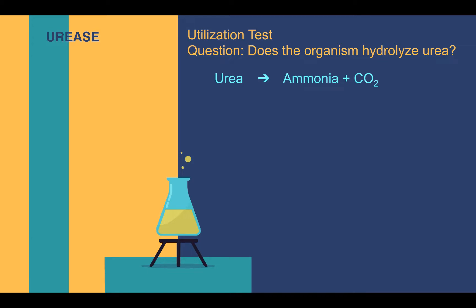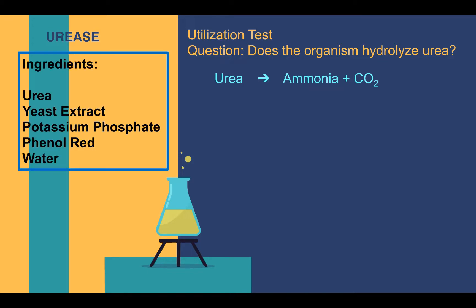Let's look at the ingredients of this medium. First, there is urea — we provide urea to the organism to see if it can break it down. Next, there is yeast extract, which is the only source of nutrients in this medium. This medium is also highly buffered, and that is the role that potassium phosphate serves. If an organism is capable of using urea as a sole nitrogen source and produces sufficient quantities of ammonia, it will overcome the high buffering capacity of this medium and result in a color change.